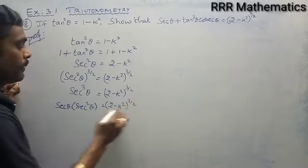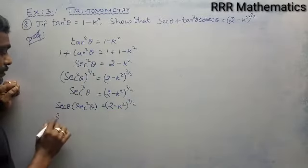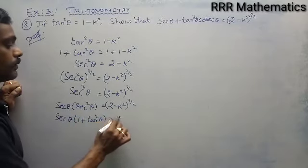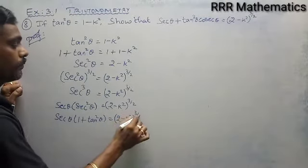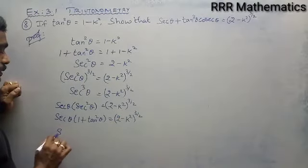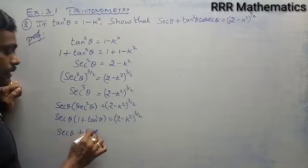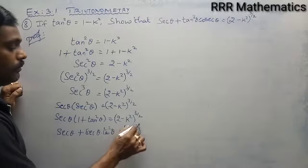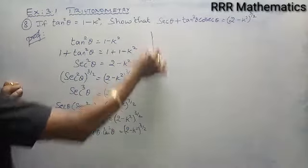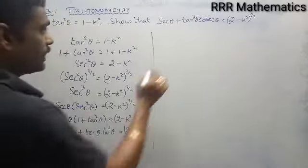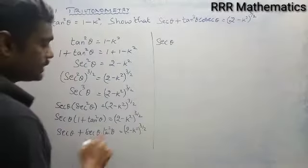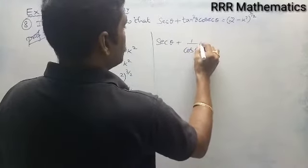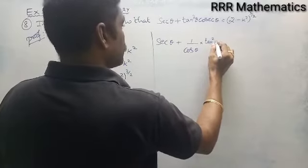What is secant squared theta? I can write it as 1 plus tan squared theta. Now multiplying: this gives secant theta into 1, which is secant theta, plus secant theta into tan squared theta. But in the proof I have tan cube theta, so I will write secant theta plus 1 by cos theta into tan squared theta.